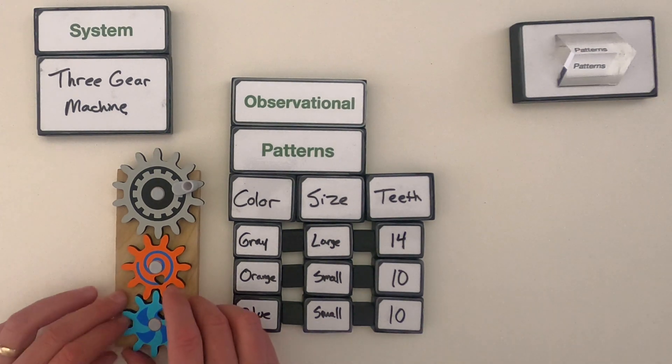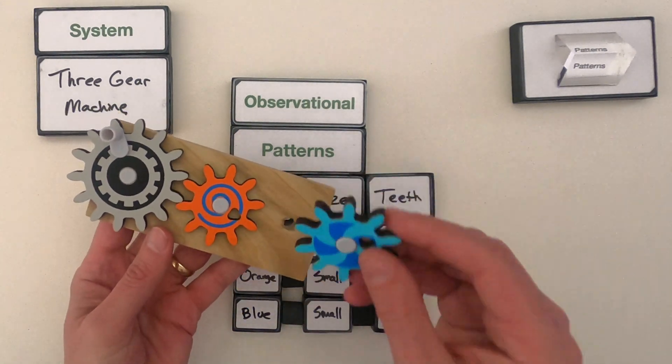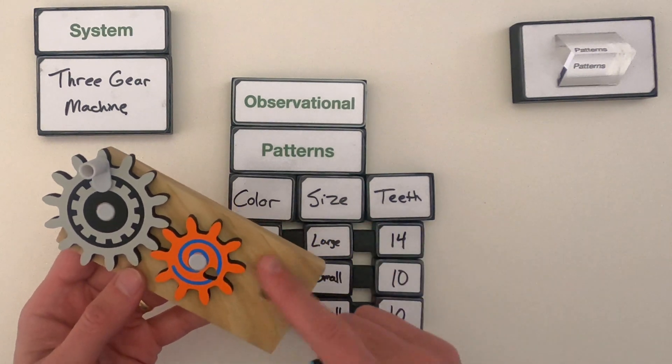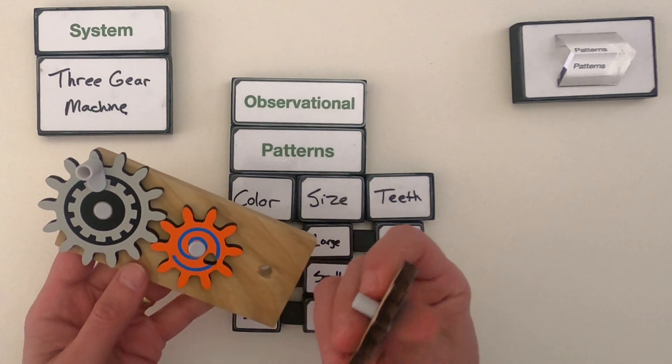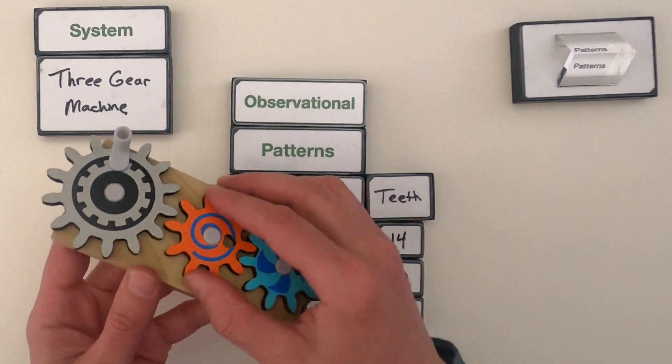Next thing I might do is just play with them. The sense of touch is really important when we're looking for observational patterns. This is definitely wood and these are made of kind of a plywood, it looks like. Let me write that down as a material.